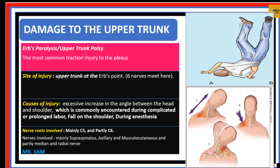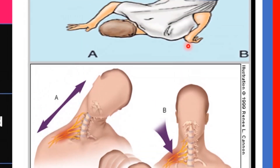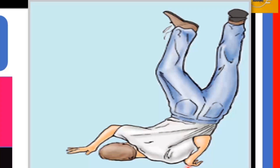What causes Erb's palsy? It occurs when there is an excessive increase in the angle between the head and the shoulder, putting pressure on the upper trunk at Erb's point and causing a lesion there. It can also result from complicated or prolonged labor, a fall on the shoulder, or other causes.